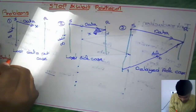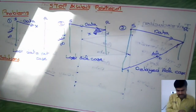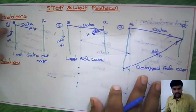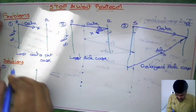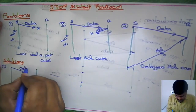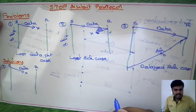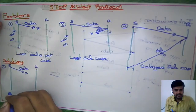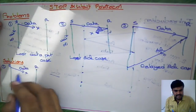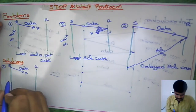Now, solutions for problems in the Stop-and-Wait protocol itself. For the first problem, whenever you send a data packet, assume that this data packet is lost. The sender is not going to wait infinite time — he should resend this packet after a certain amount of time. That certain amount of time we already discussed is called timeout.